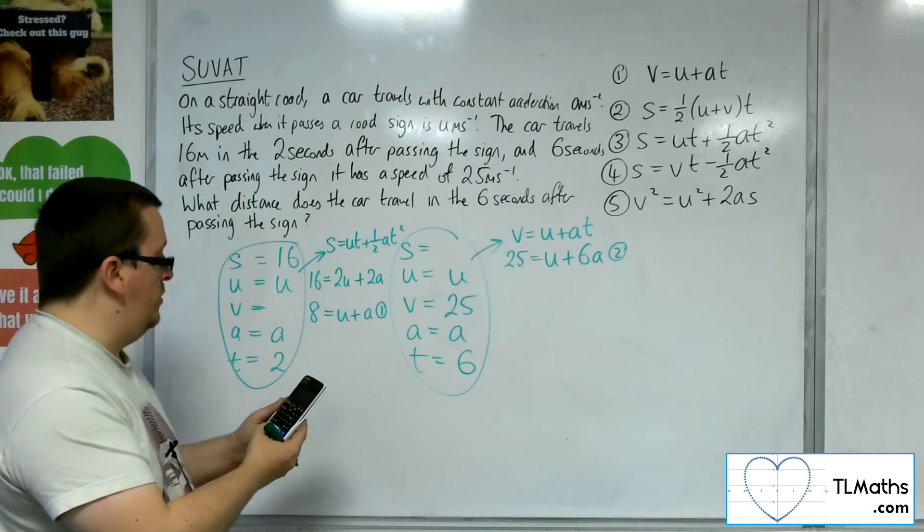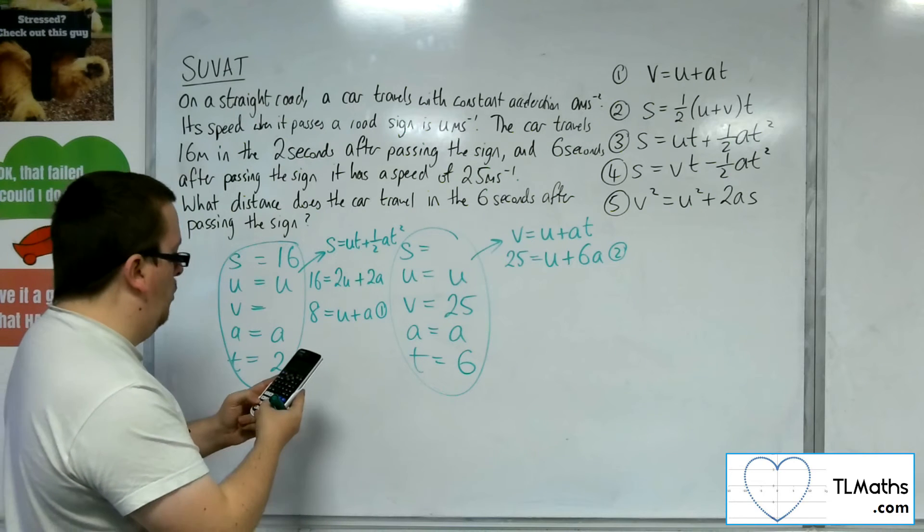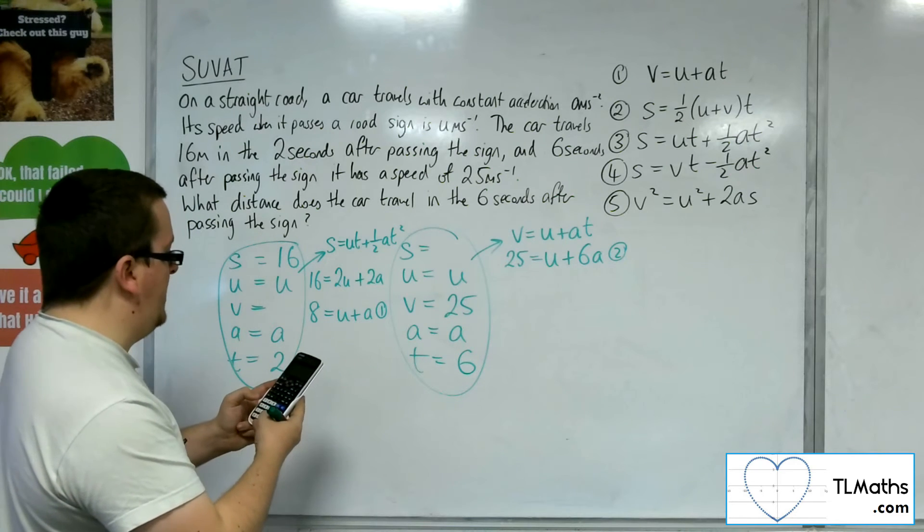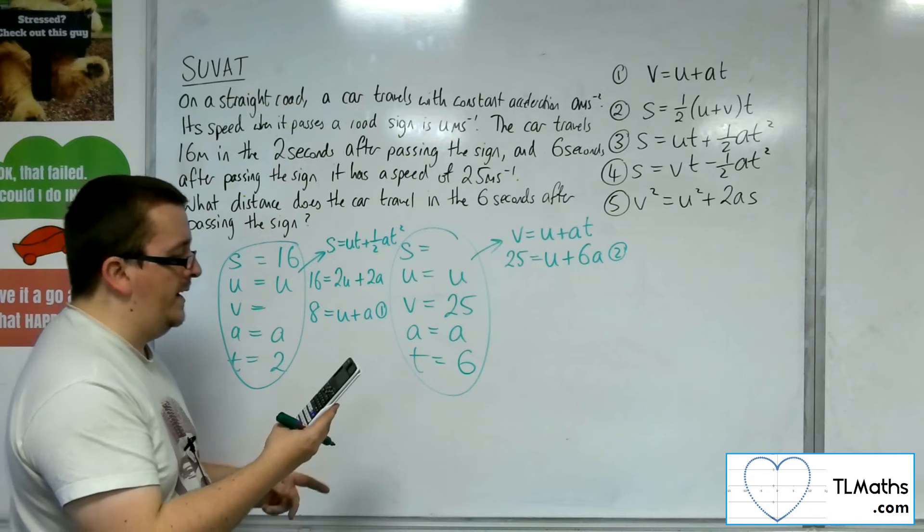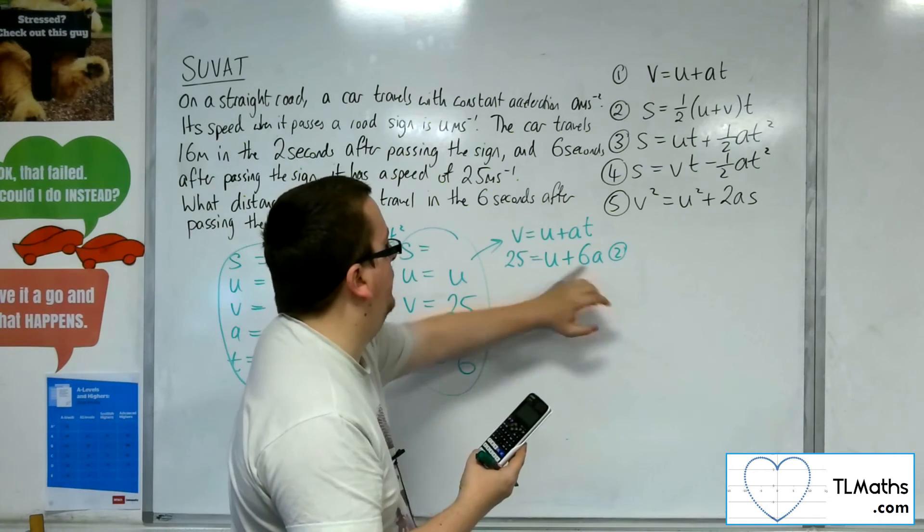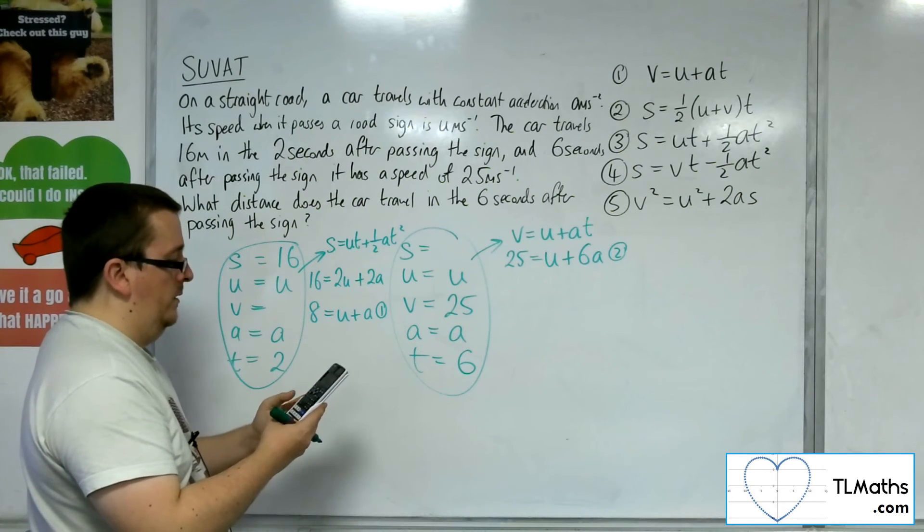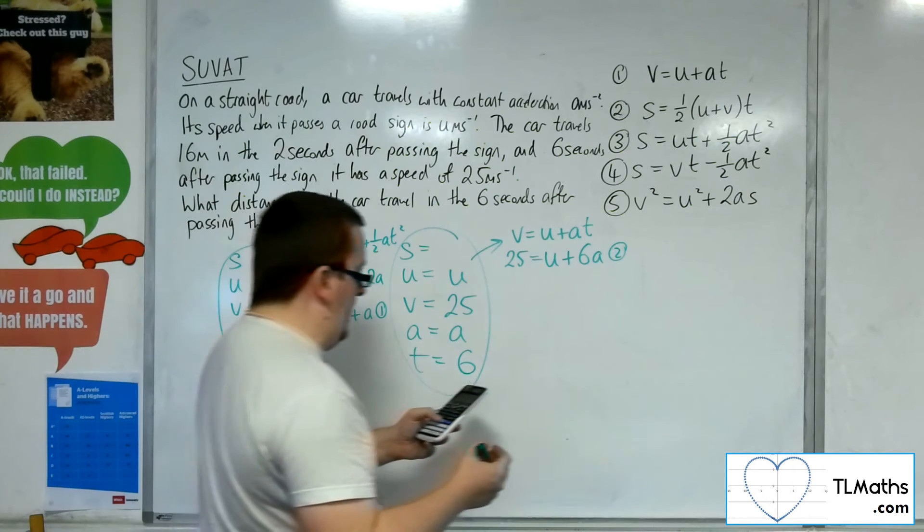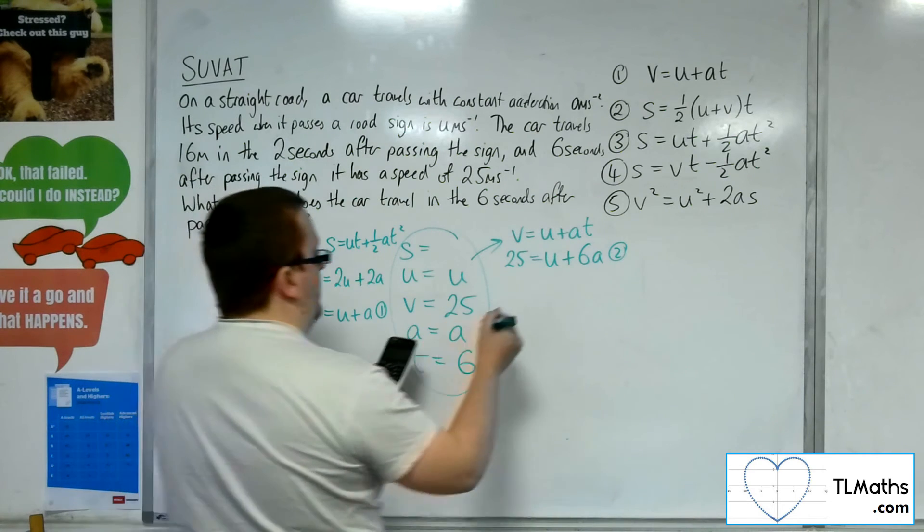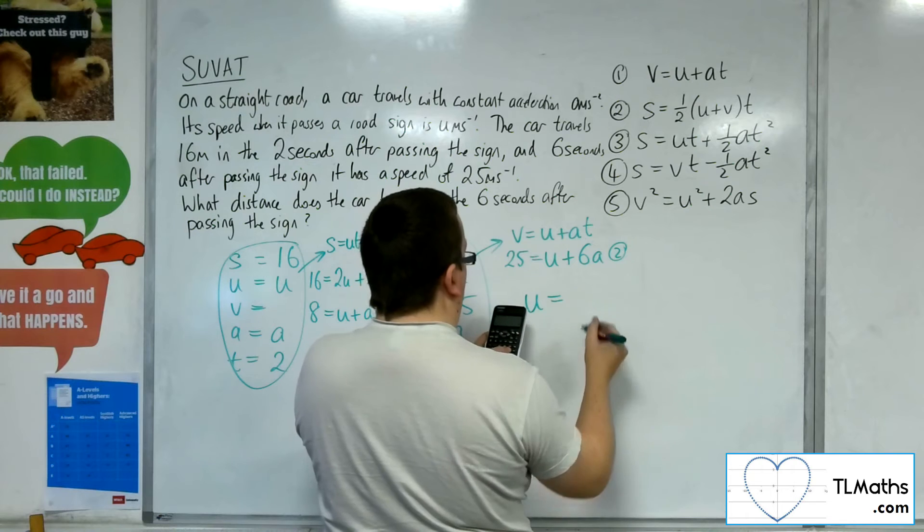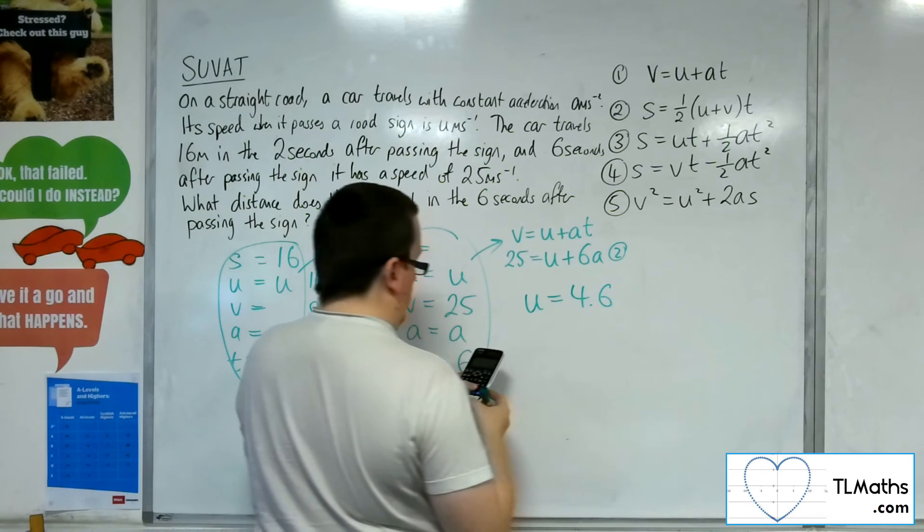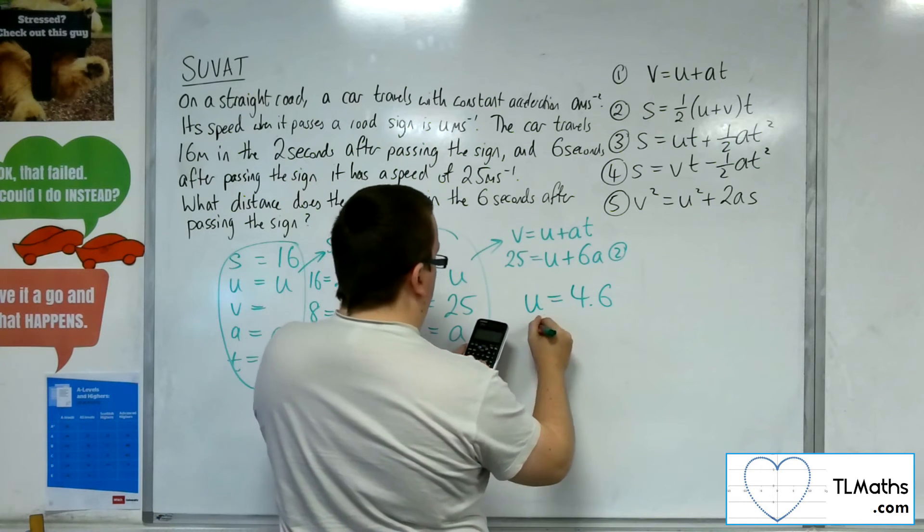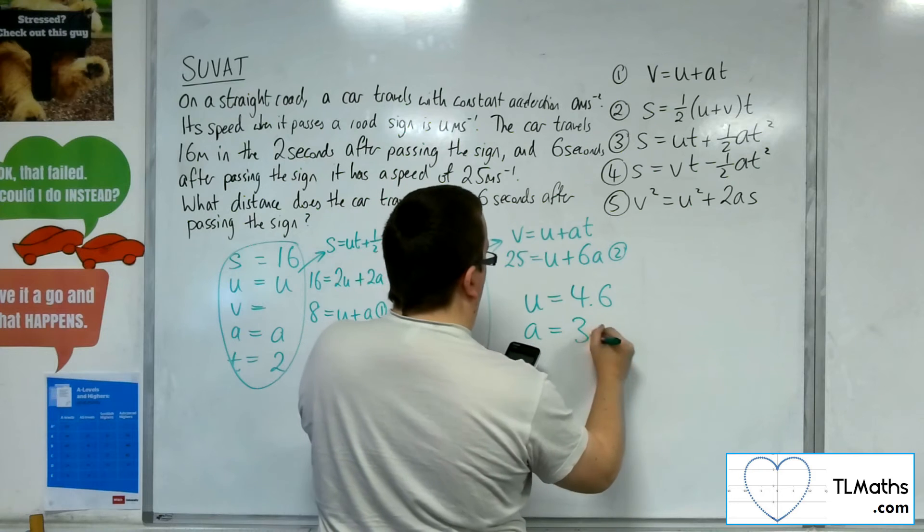So simultaneous equations. So we're going to have 1, 1 and 8. I'm going to take the x as u. And 1, 6, 25. So the u I get from this is 4.6 and the a I get as 3.4.